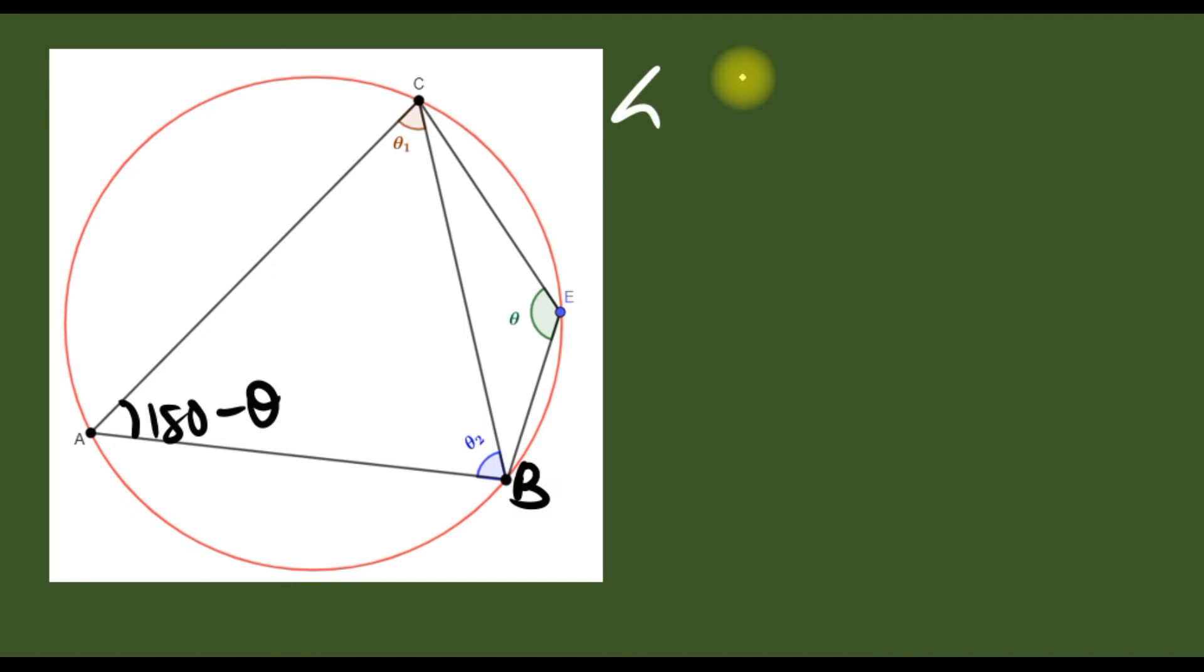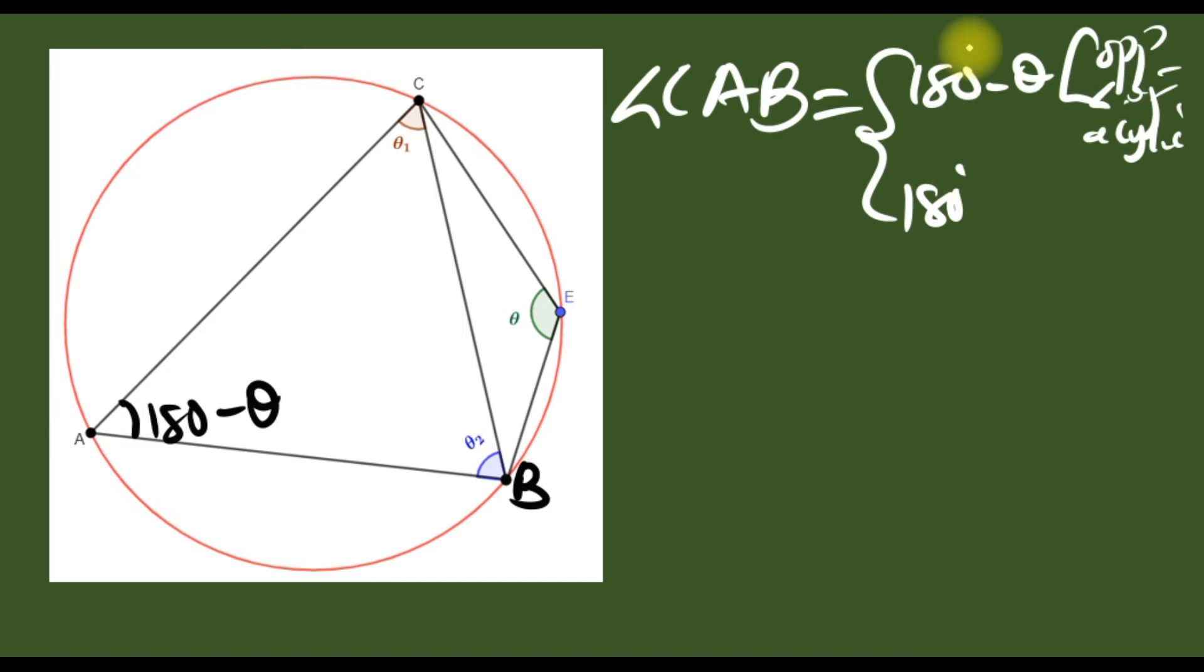And also I'm saying that angle CAB has two values. The first value is 180 minus theta because of the opposite angle of a cyclic quadrilateral, while the second value is also 180 minus theta one plus theta two because of the triangle angle sum.